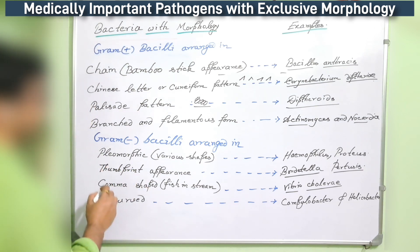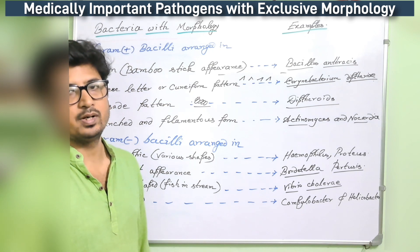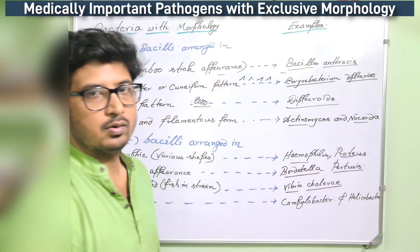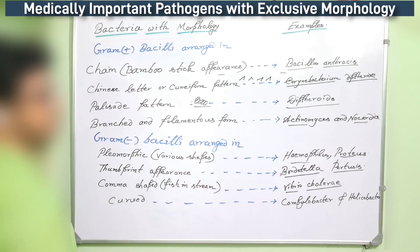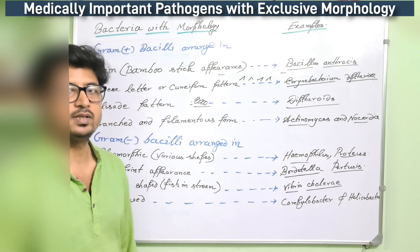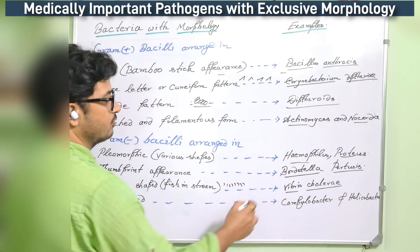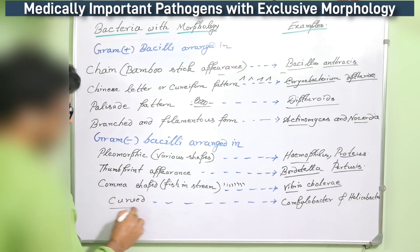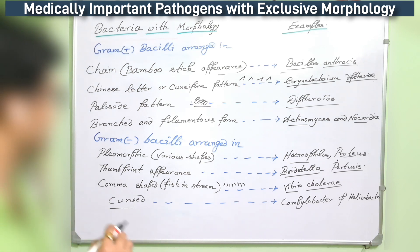Now gram-negative bacilli arranged in pleomorphic form — meaning no definite shape — can be found exclusively for Haemophilus and Proteus species. Next is the thumb-print type appearance, found exclusively for Bordetella pertussis. Then the comma-shaped or fish-in-a-stream appearance can be observed for Vibrio cholerae. Lastly, curved bacteria — Campylobacter and Helicobacter — are called curved bacteria and show a curved structure under the microscope.